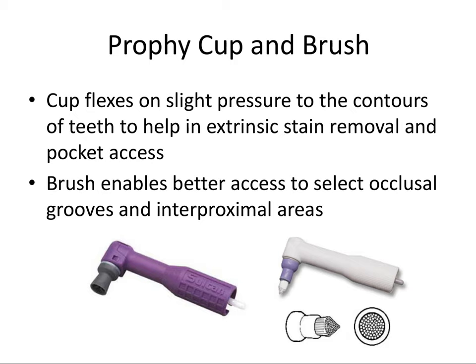After scaling and root planing, we provide a prophylaxis for the patient to remove any supragingival plaque remaining on the tooth enamel, using a prophy cup and brush. The prophy cup is loaded into a slow-speed handpiece so the rubber cup rotates at slow speed, loaded with prophy paste that has some grittiness to it. The cup flexes on slight pressure to the contours of the teeth to help with extrinsic stain removal and pocket access — you can actually go slightly subgingival. The brush enables better access to occlusal grooves and interproximal areas that the cup cannot reach.